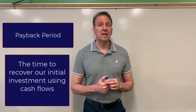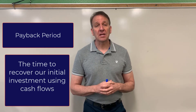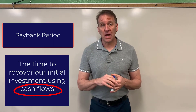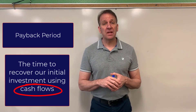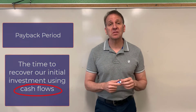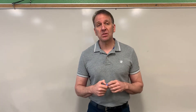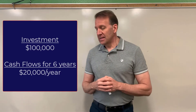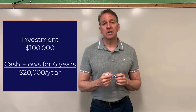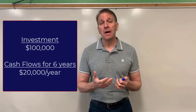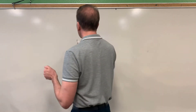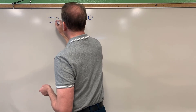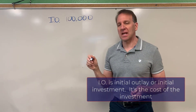The first example is an even cash flow situation. Before we look at this, note that we're looking at cash flows, not accounting profits — this method uses cash flows. Let's assume this investment, say it's equipment, is going to cost us $100,000. And over the next six years it's going to give us a cash flow of $20,000 a year. So we have $100,000 as our initial investment, or initial outlay as many textbooks call it.